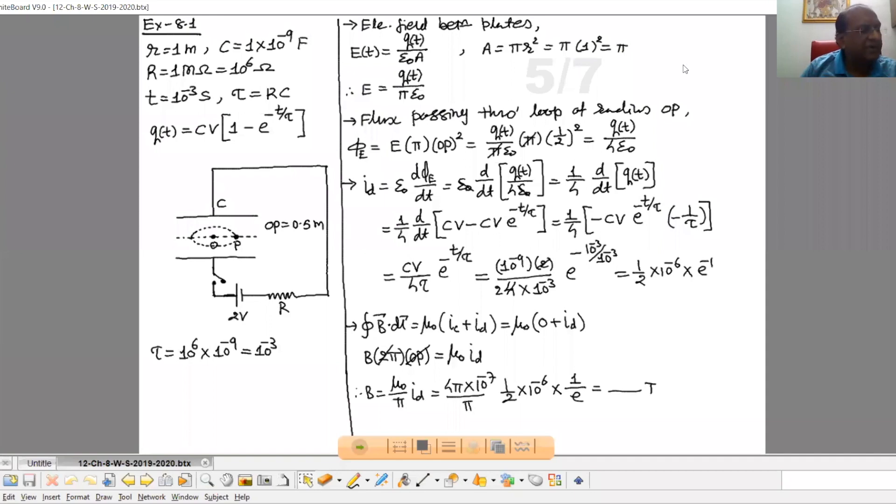Example 8.1: A parallel plate capacitor with circular plates of radius 1 meter has a capacitance of 1 nanofarad at time t equal to 0. It is connected for charging in series with resistor R equal to 1 megaohm across a 2 volt battery. See the figure.